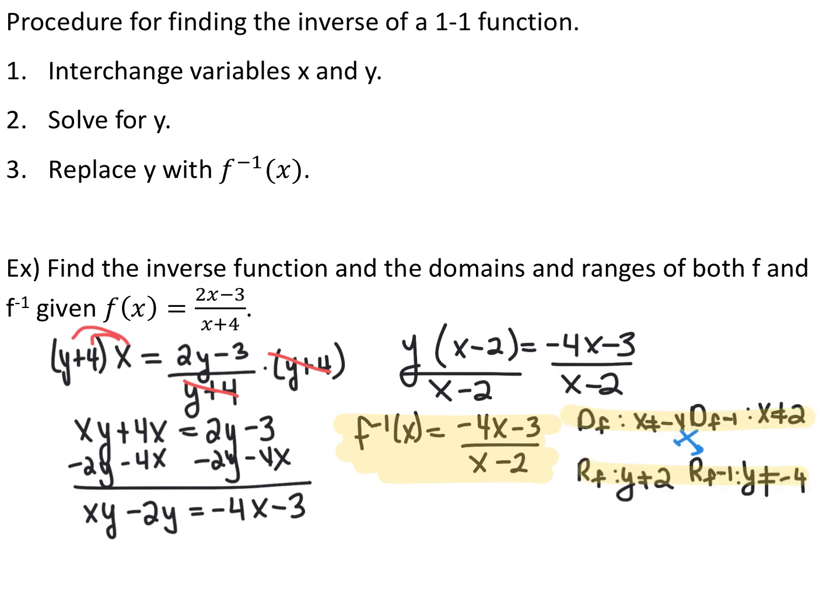For the domains and ranges: the domain of the original function f is x cannot be negative 4, and the domain of the inverse function is x cannot be 2. Applying these to the opposite ranges: the range of f is y cannot be 2, and the range of f⁻¹ is y cannot be negative 4.